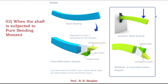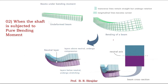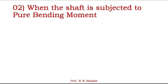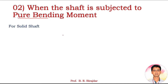The second case is when the shaft is subjected to pure bending moment. For a simply supported beam with a load applied, it will bend; similarly for a cantilever beam. Different layers exist — the neutral axis, upper part is compressive, lower part is tensile in nature. These are the bending stresses developed in the beam.